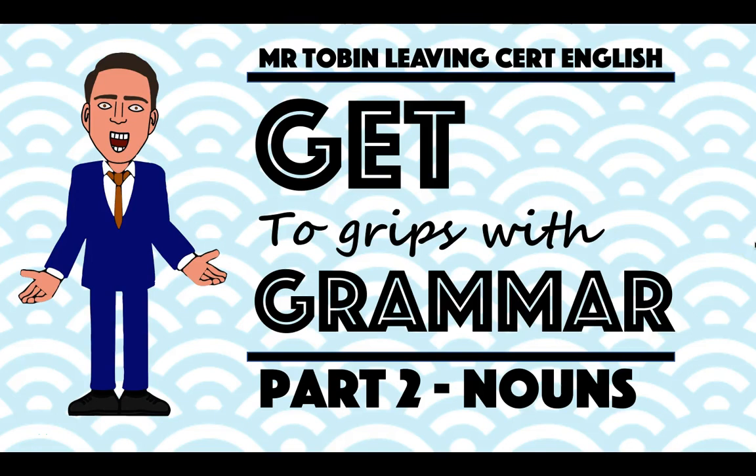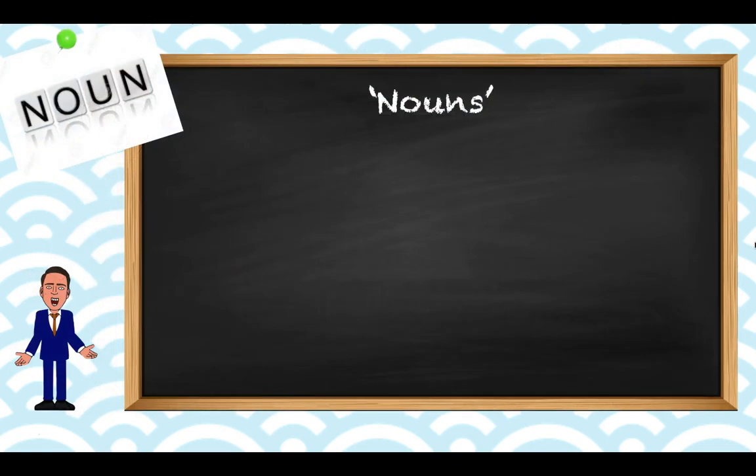Hi everyone and welcome to the next video in the series on grammar basics, where we're going to look at nouns. In the first video we looked at different types of verbs and we saw how every sentence has to have a verb and a subject, someone doing that verb, in order to make sense. A sentence doesn't have to have a noun to be a full sentence, but they are important too. They make up the majority of the words that we use in English.